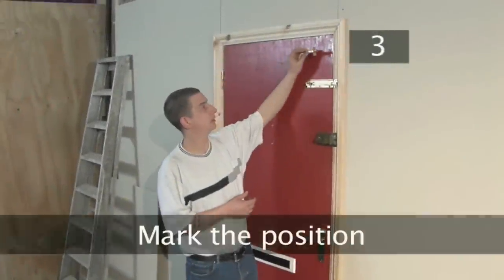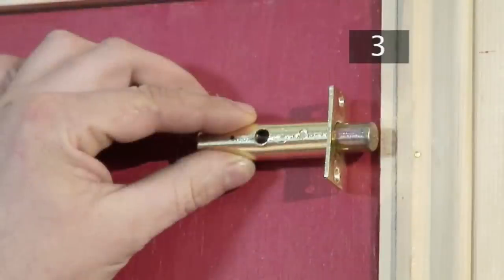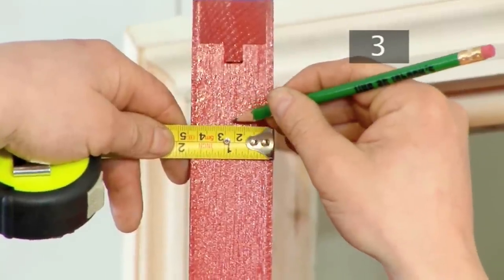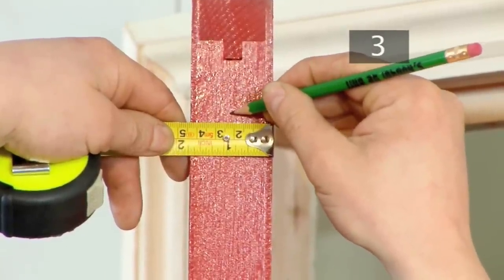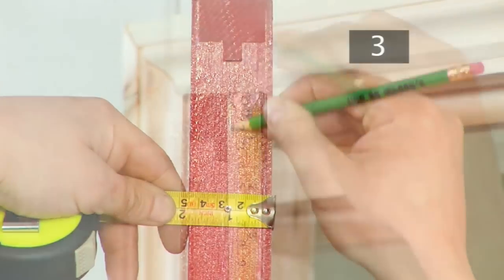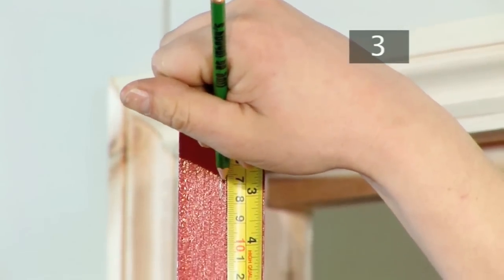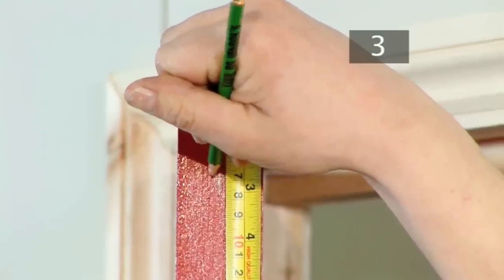Step 3. Mark the position. Decide whether you want to fit your rack bolt to the top or side of the door. Methods of fitting are the same. We're fitting ours to the side of the door. Use the tape measure to find the center point of the edge of the door and mark it with a pencil. Then, choose the height for the bolt and draw another line which crosses the center point.